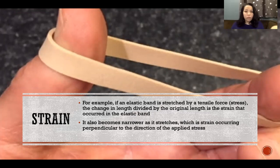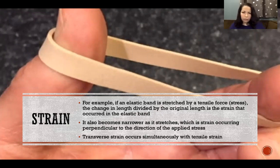At the same time as you're stretching it, it doesn't just change in length, it also changes in width. As you're stretching that rubber band it becomes more narrow as you stretch it, so that would be an example of transverse strain.